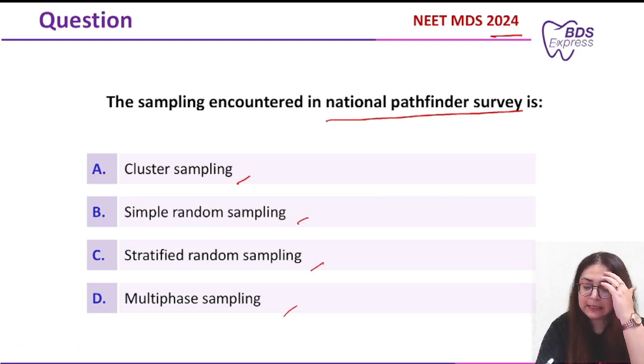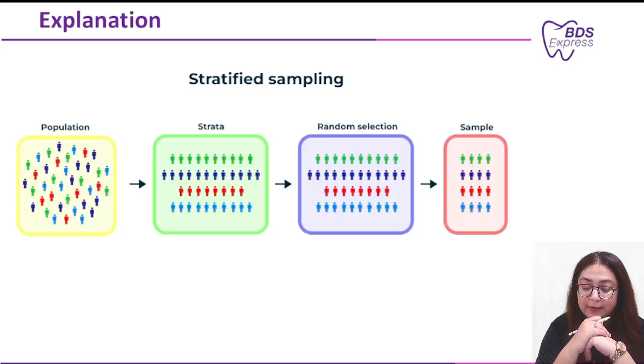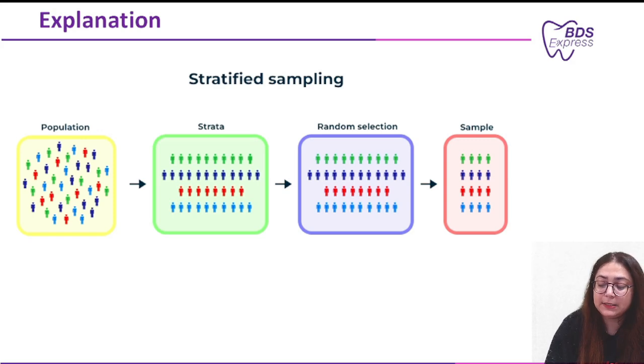Now, how is sampling done in the National Pathfinder Survey? In the National Pathfinder Survey, sampling is done as random stratified sampling.